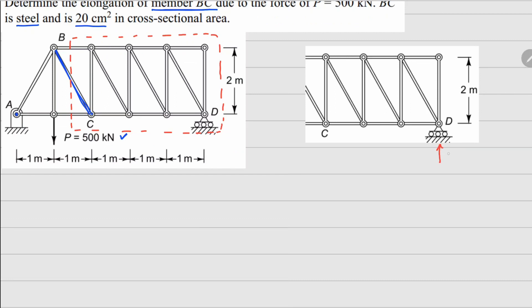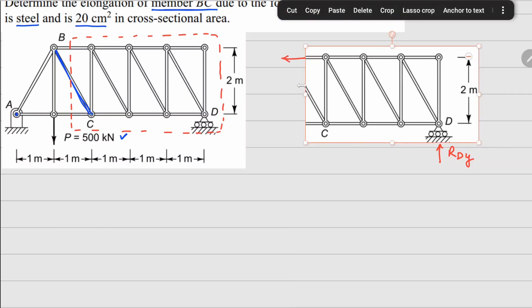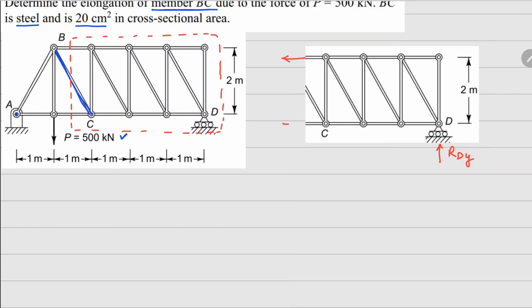On this structure we have a reaction coming here which is rdy, and these member forces will be there - one force going this way, another member force going this way, and this member force which is your member fbc.